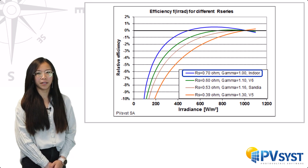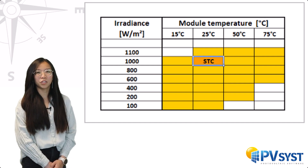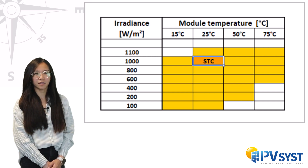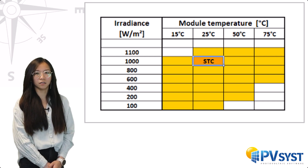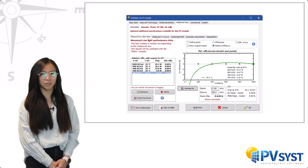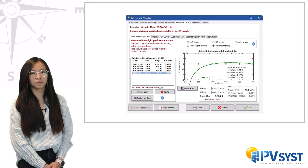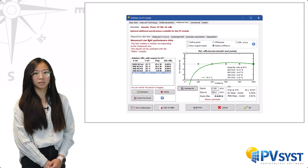This leads to the present determination of R series obtained to best match measured low light performance. This determination may be based on standardized measurements now performed by many independent laboratories, following the IEC 61853 standard, which requires flash test results of three identical modules for 27 operating conditions. In PVSYS, we only use the points at 25°C for 1000, 800, 600, 400, and 200 W/m². We adjust the R series value to match these experimental points, and when the measurements are clean, the match is usually quite correct.